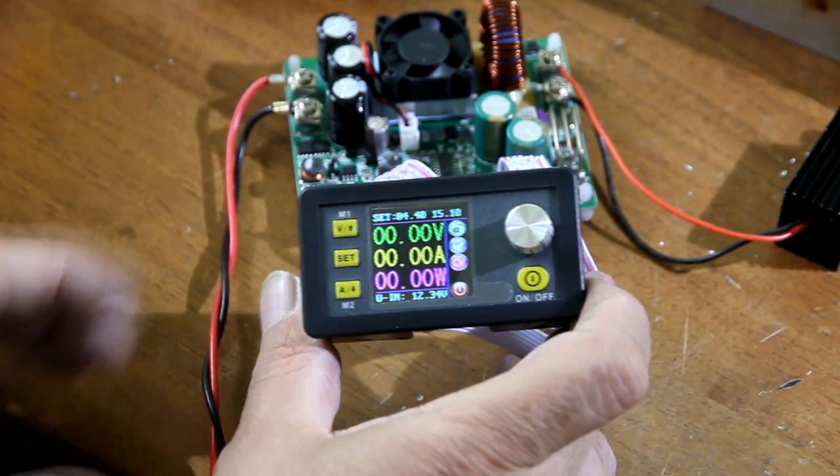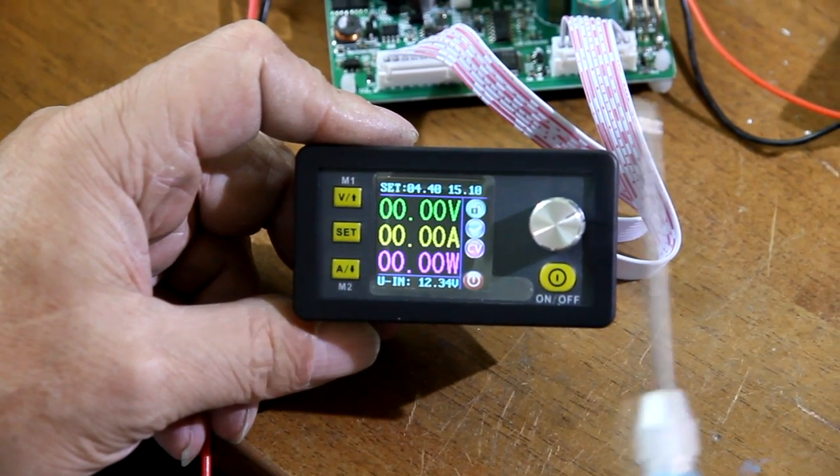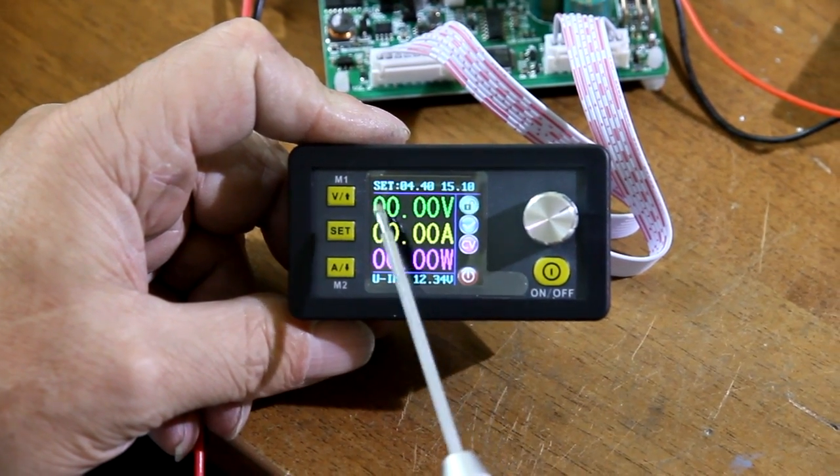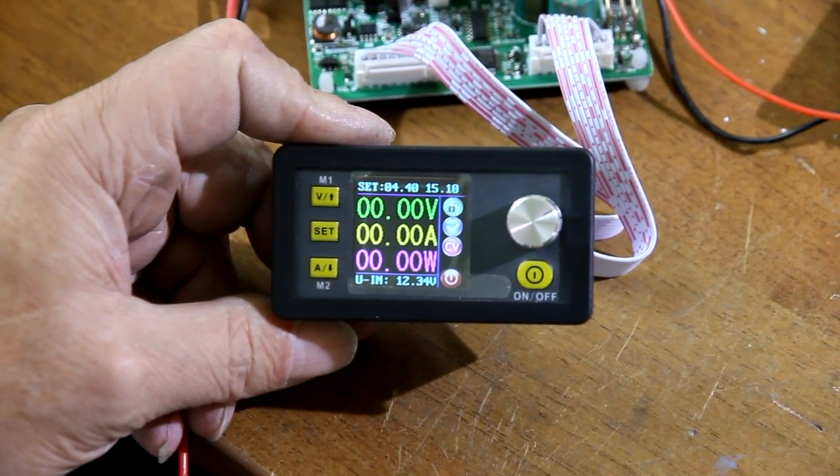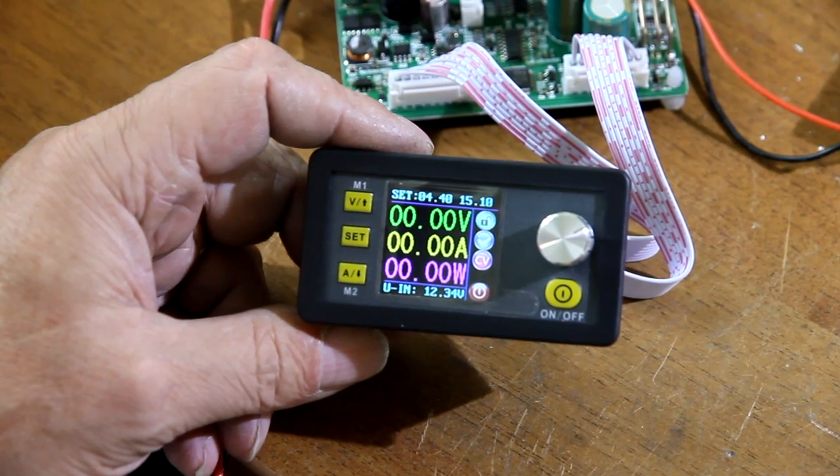Let's turn this unit on. We can set up voltage and maximum current. So let's set 4.4 volts and the maximum current of 15 amps.